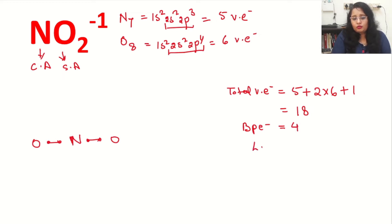Now we will count non-bonding electrons. It will be total valence electrons minus bond pair electrons. So total will be 18 minus bond pair is 4, so it will come 14. Now these 14 electrons will be used as a lone pair, or if it is not satisfying the octet, we will use it as a double bond or triple bond.